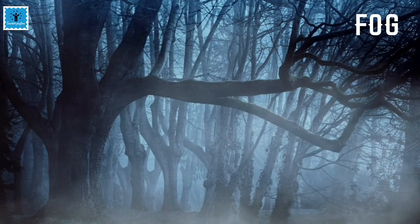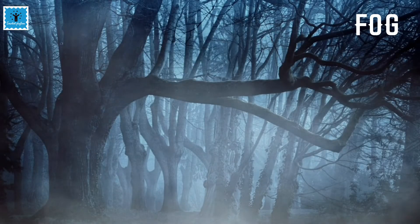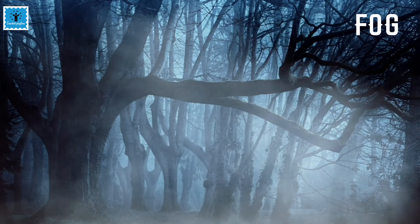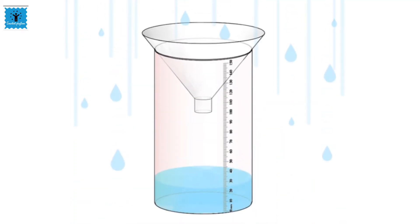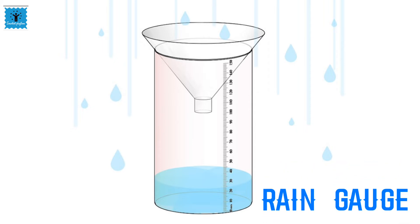An instrument used to measure rainfall is called a rain gauge. It is like a measuring cylinder with a funnel capped on its top which collects the rainwater. The rainwater collected in the measuring cylinder gives a measure of rainfall, and rainfall is generally measured in millimeters.